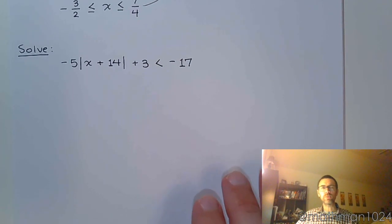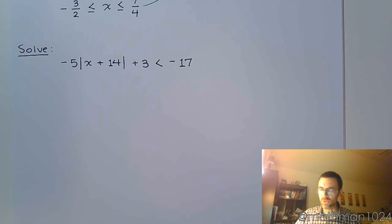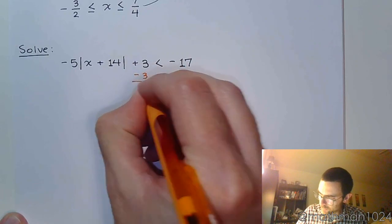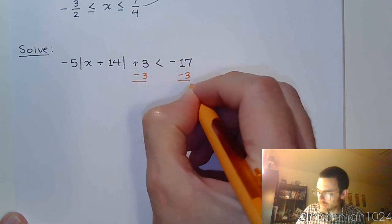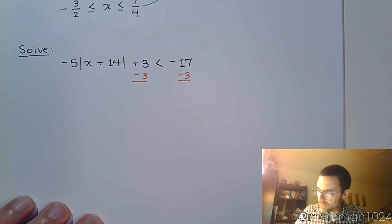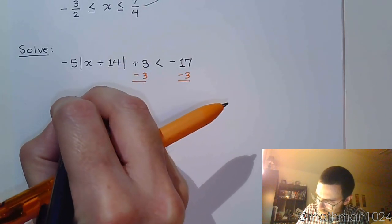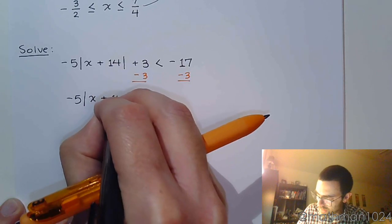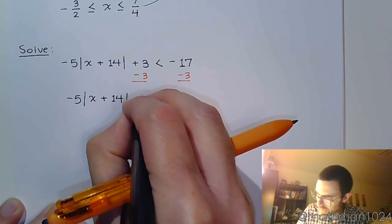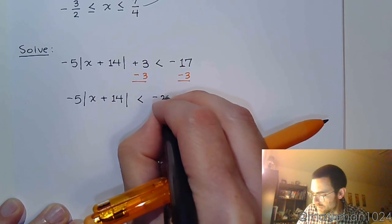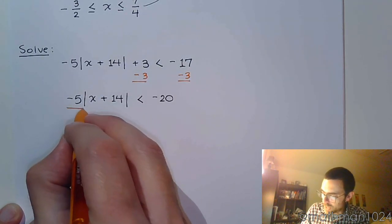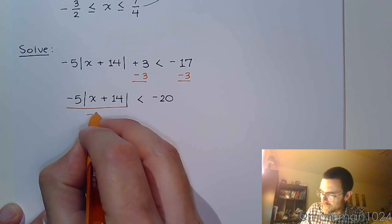So here, we have an absolute value, but we need to get it by itself first. So to do that, I need to subtract the 3. So subtract 3 everywhere. Negative 5 times the absolute value of x plus 14 is less than negative 20. A lot of negatives going on here, so let's go ahead and get rid of that by dividing both sides by negative 5.